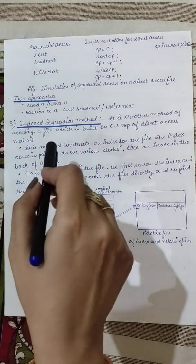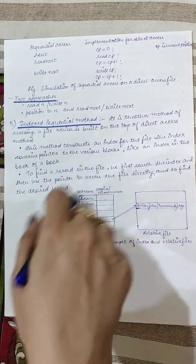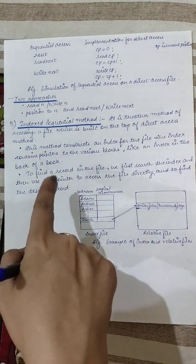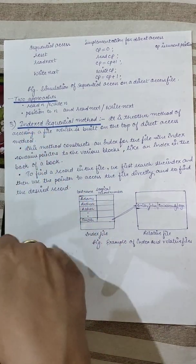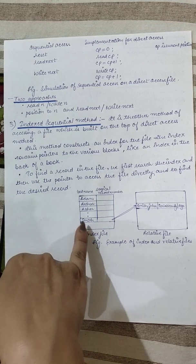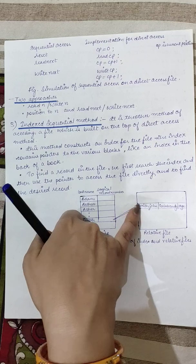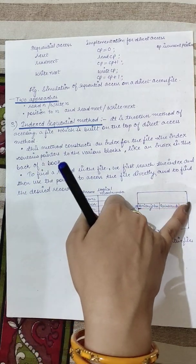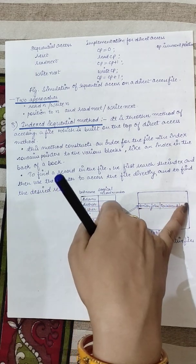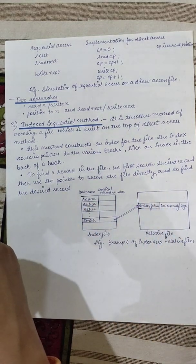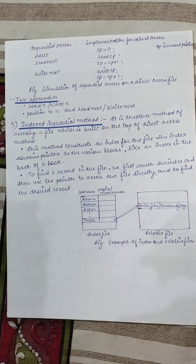The difference between sequential and indexed sequential is that in sequential access you access all records one by one, whereas in indexed sequential you access only the record whose index is given. For example, if looking for Smith, you go to the Smith index, follow the pointer directly to Smith's record in the relative file, and access all of Smith's data. These are the three file access methods: sequential, direct, and indexed sequential.